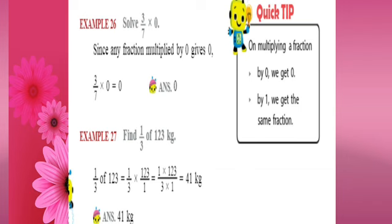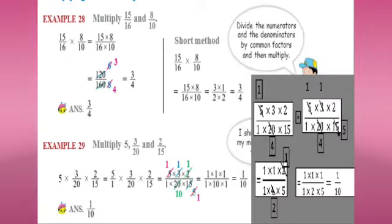Next sum: find 1 by 3 of 123 kg. Here 123 is a whole number, so the first step is to convert it into a fraction: 123 by 1. Then 1 by 3 of 123 means multiply, so 1 by 3 into 123 by 1. Multiply the numerators: 1 into 123 equals 123. Multiply the denominators: 3 into 1 equals 3. So 123 by 3 gives 41 as the quotient. The answer is 41 kg.